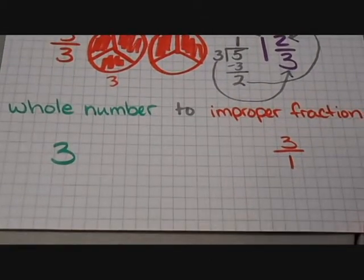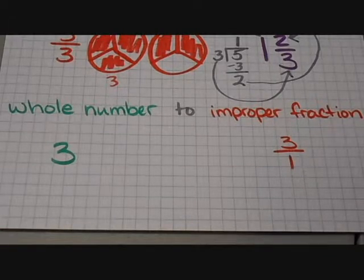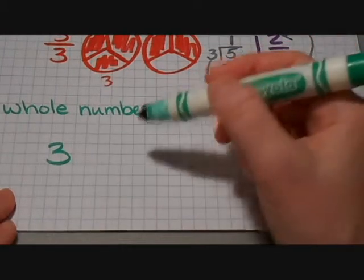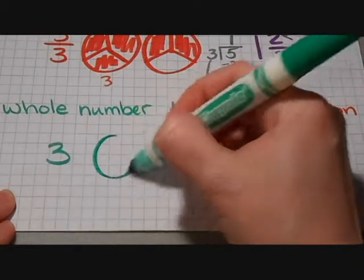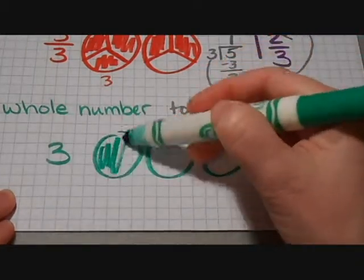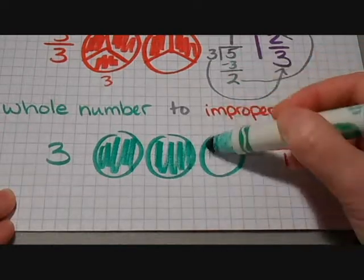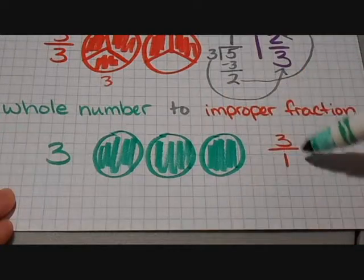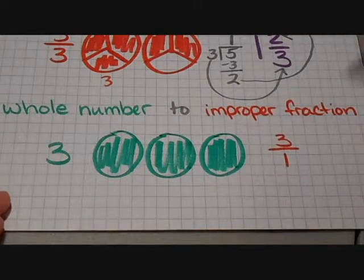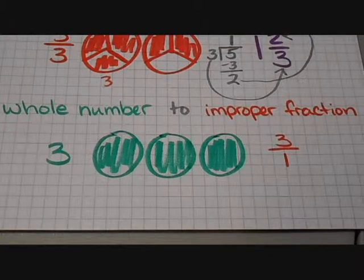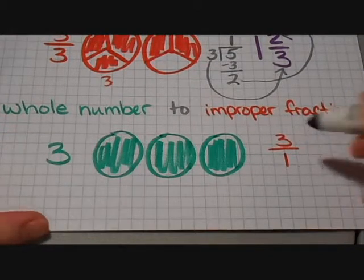This last one is my favorite because it's the easiest. If you have a whole number and you need to turn it into a fraction, maybe you're dividing or multiplying with fractions, then you simply, if you have three wholes, well, each of those are not cut into pieces. So it's just one on the bottom. So you have three over one. You just take that whole number and turn it into a fraction by sticking it over one.